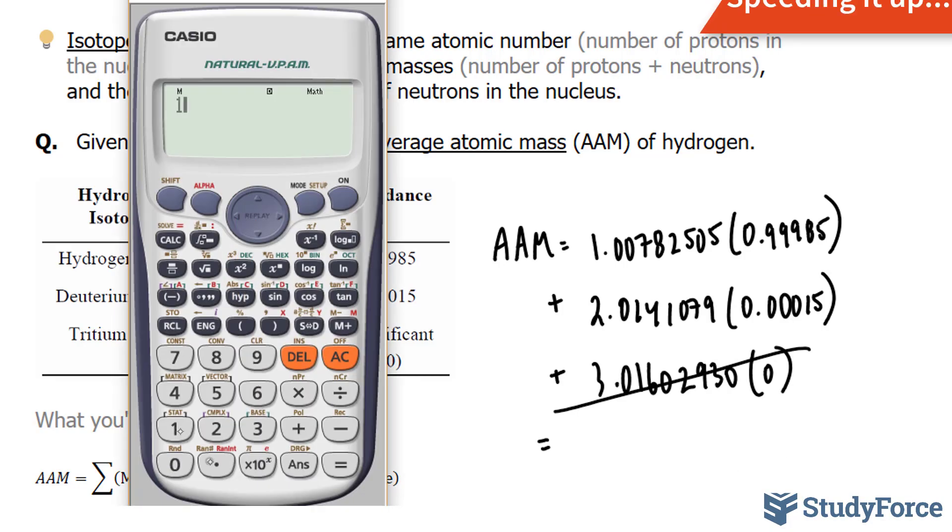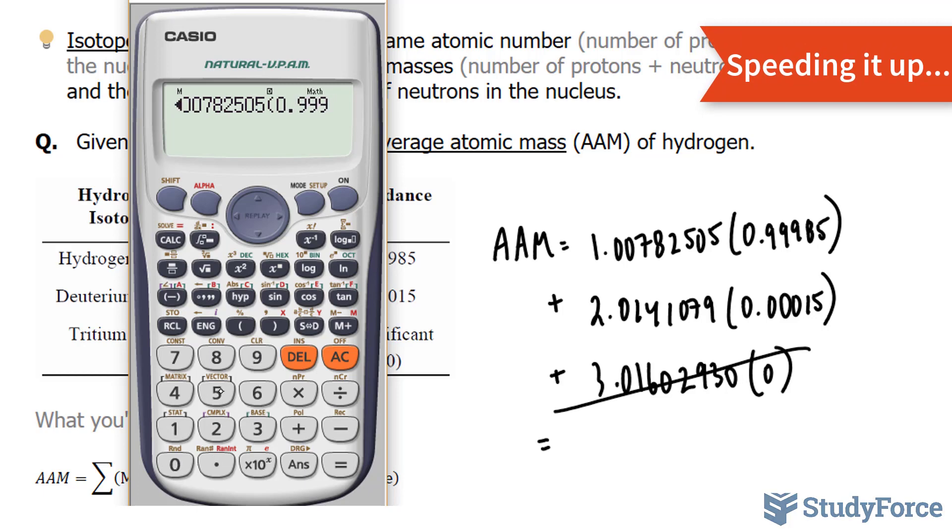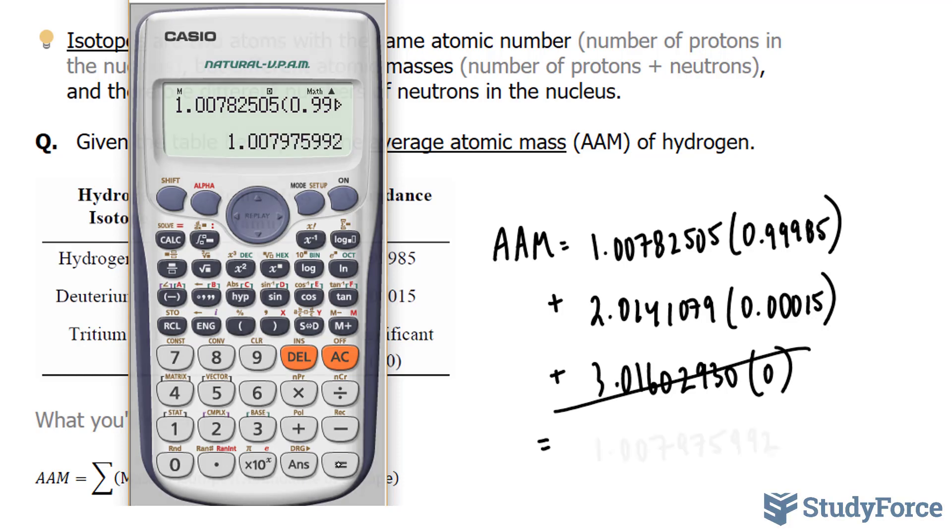So we're left with, using our calculator, 0.00015. And I'm not going to bother adding this, because it's 0 already. And this gives us the following average.